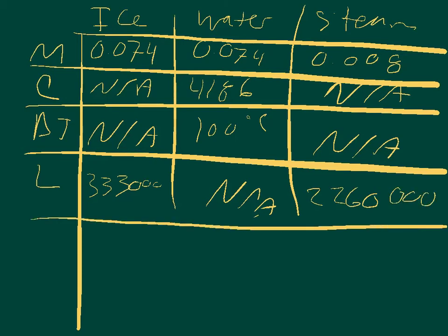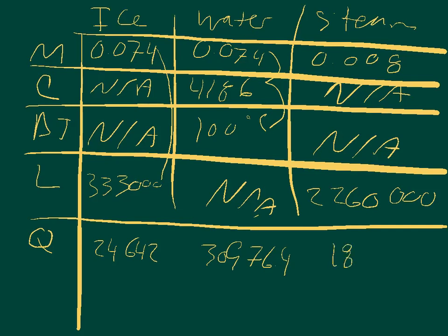We can use this to calculate Q for each of these. Multiply to get Q equals 24,642 joules for ice. Multiply these three to get that the Q for water was 30,976.4 joules, and that the energy for steam was 18,080 joules.